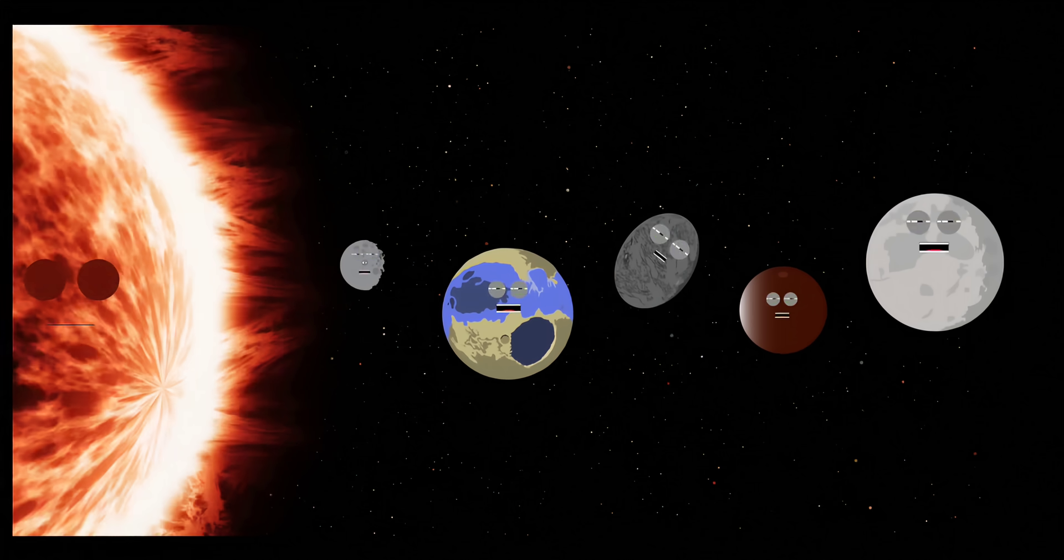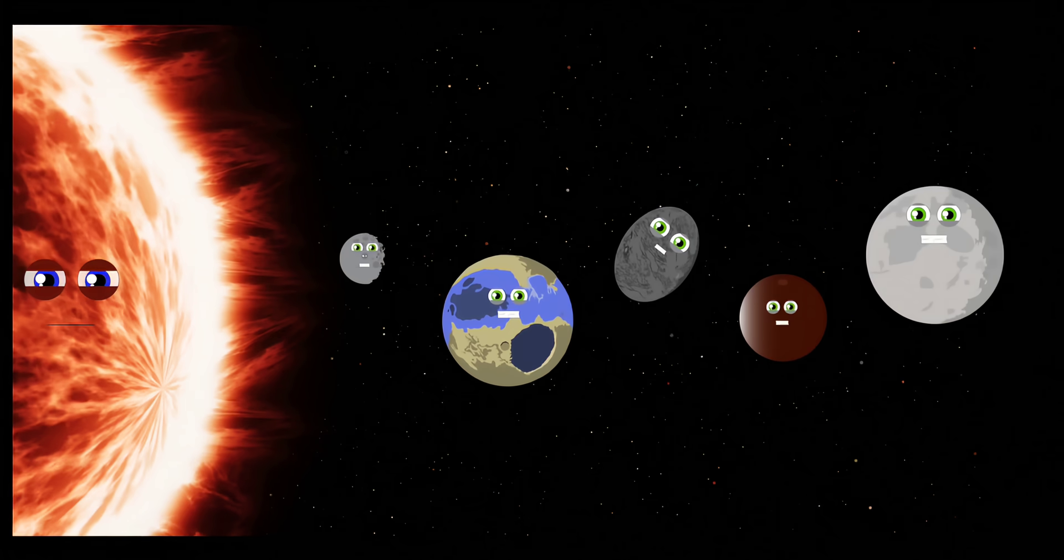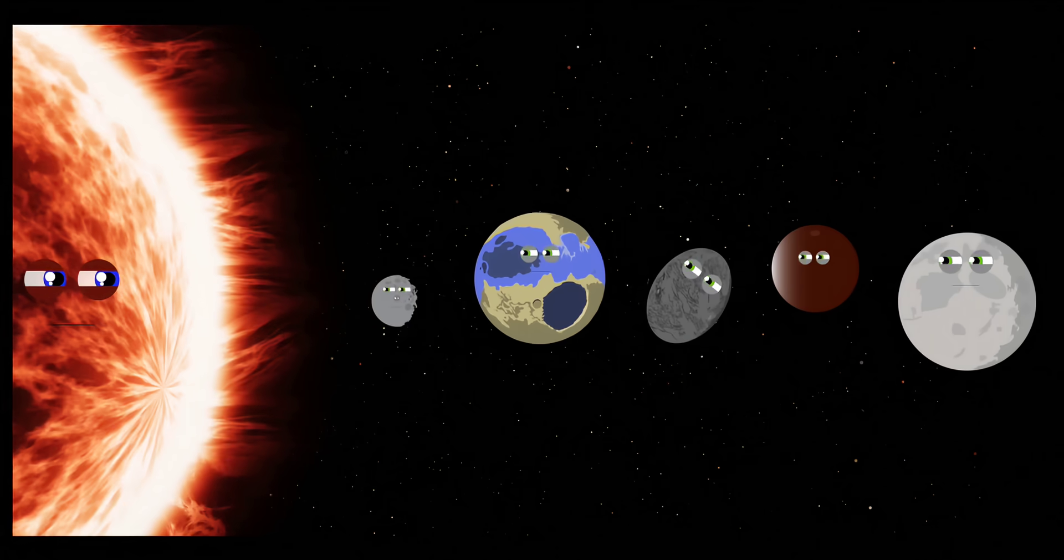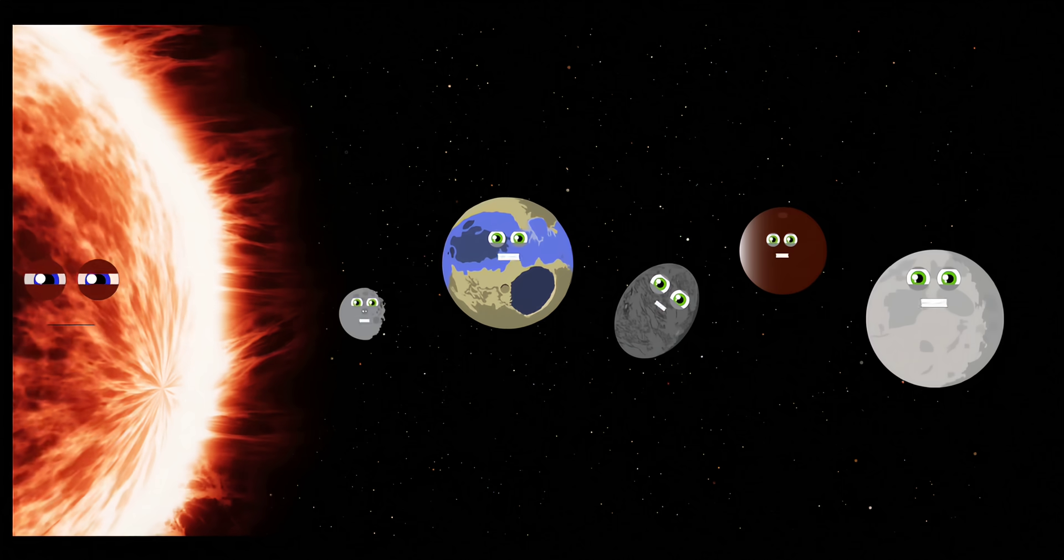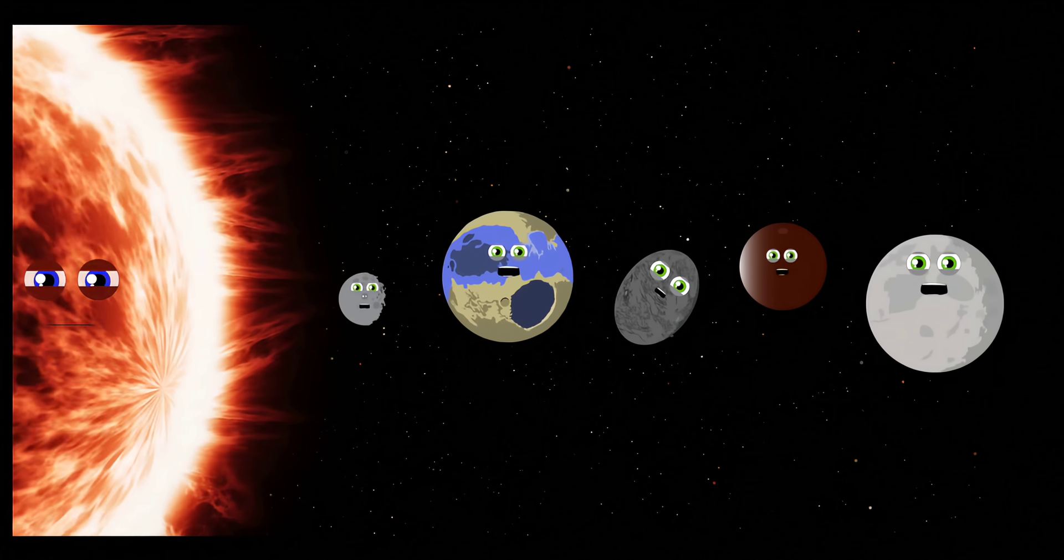There are five dwarf planets in our solar system and we revolve around the sun. Four of us live in the Kuiper Belt. As far as planets, we're the smallest ones.